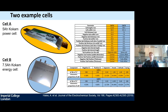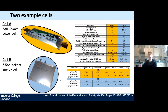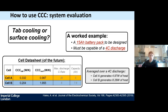Using the cell cooling coefficient, we can have a good approximation of cell thermal performance with just the information on the datasheet — derived without any knowledge of the cell's internal composition and properties. Here I walk through a simple worked example where we are designing a 15 amp-hour battery pack capable of a 4C discharge. We would need either three Cell A's (each 5 amp-hours) or two Cell B's (each 7.5 amp-hours). Both cells are capable of a 4C discharge according to spec sheets. A cell datasheet of the future would also include information about thermal performance.